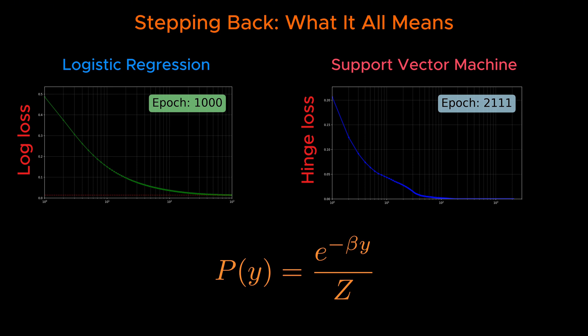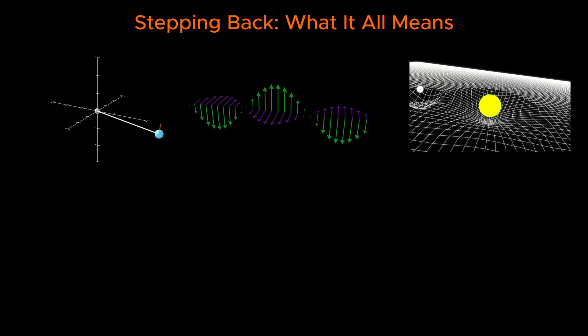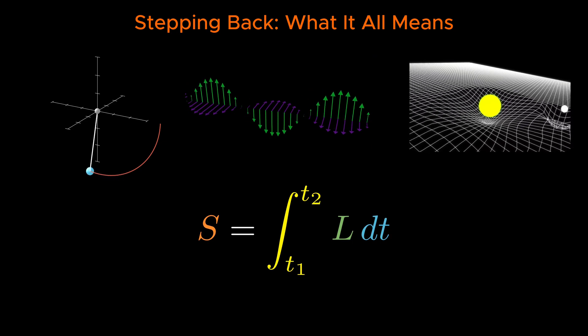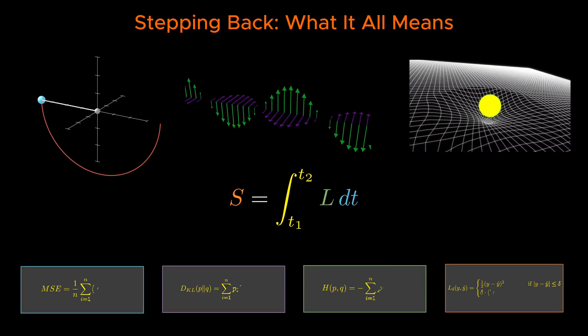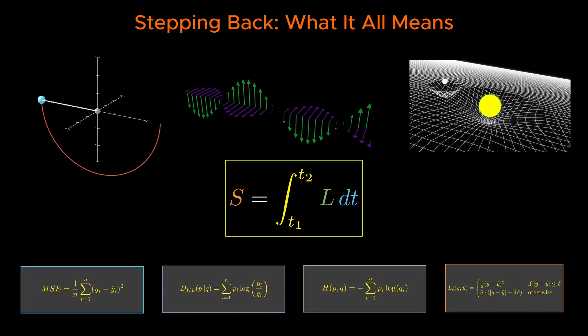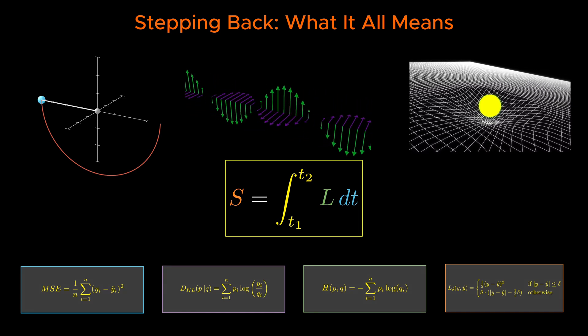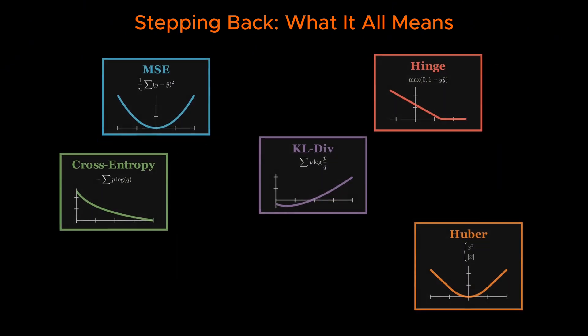But it leads to a fascinating line of thought. Why does nature, in all its complexity, use just one universal optimization principle, while we humans invent new loss functions for every problem? What is it about the mathematical form of the action in physics that makes it so special, so fundamental, so general, that it can describe everything from expanding galaxies to short-range forces in nuclear reactions?